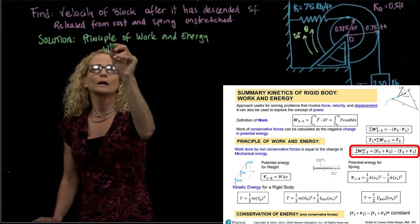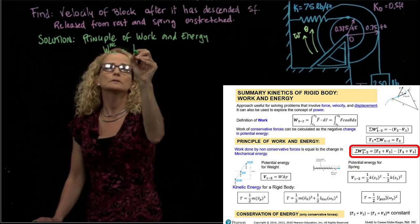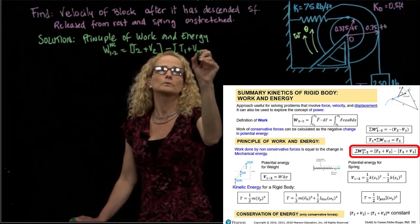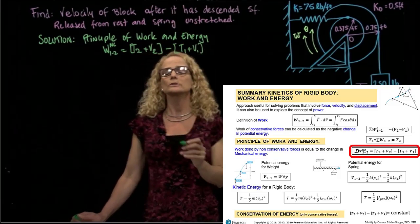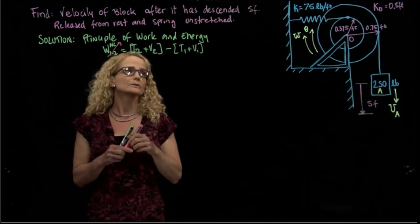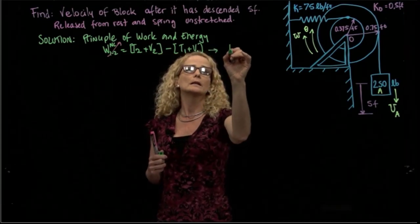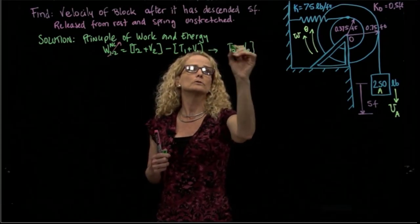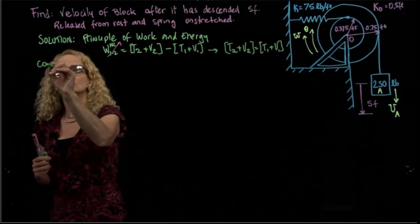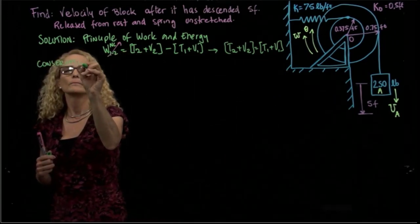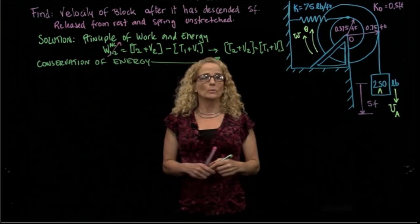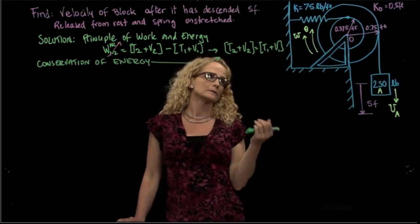The principle of work and energy states that the work done by non-conservative forces equals the total energy at the second position minus the total energy at the first position — kinetic plus potential. But since we have no non-conservative forces, the total energy in position two equals the total energy in position one. This is conservation of energy.